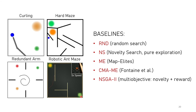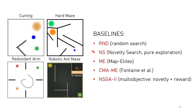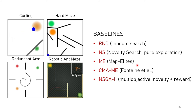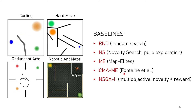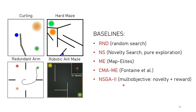We compared SERENE against five baselines. First, random search. Second, Novelty Search, which only focuses on exploration and ignores reward. Third, MAP-Elites, a divergent search algorithm that optimizes both reward and diversity. Fourth, CMA-ME, the original algorithm introduced by Fontaine. And finally, a multi-objective approach called NSGA-2, which optimizes both novelty and reward simultaneously through Pareto fronts.